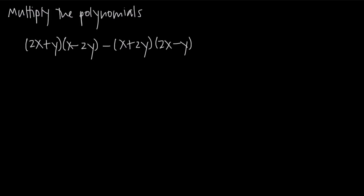In this video, we're doing another example of multiplication of polynomials. But in this particular example, we've been given multivariable polynomials, meaning we have two or more variables inside of our polynomials. In this case, we have x and y. But the fact that we have multiple variables doesn't change our process for multiplying the polynomials together at all.